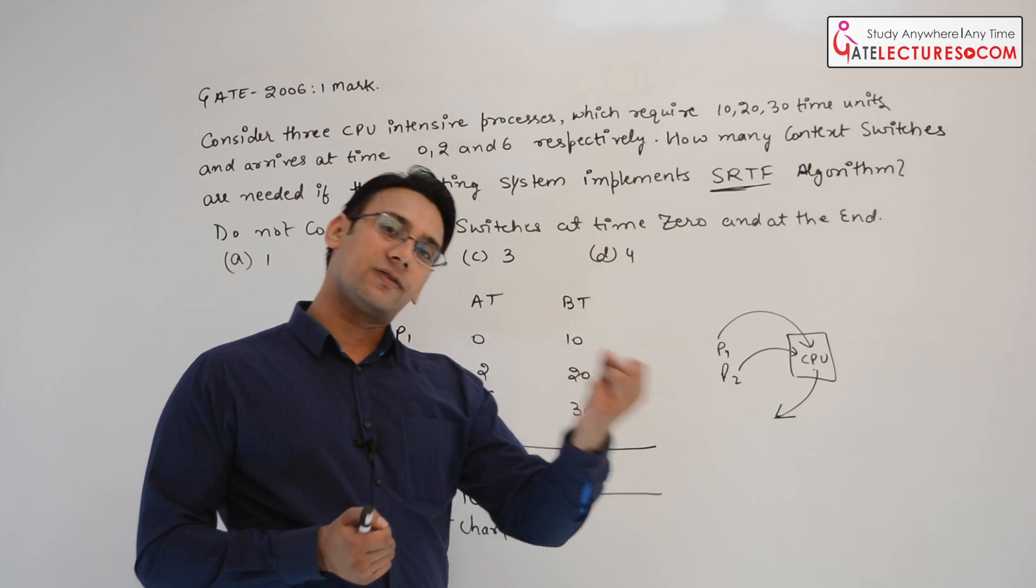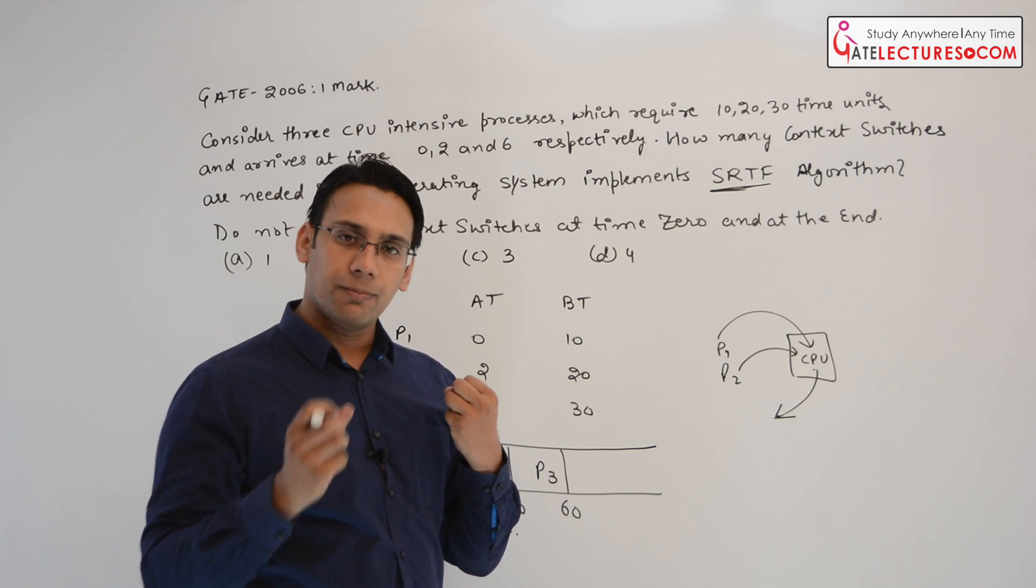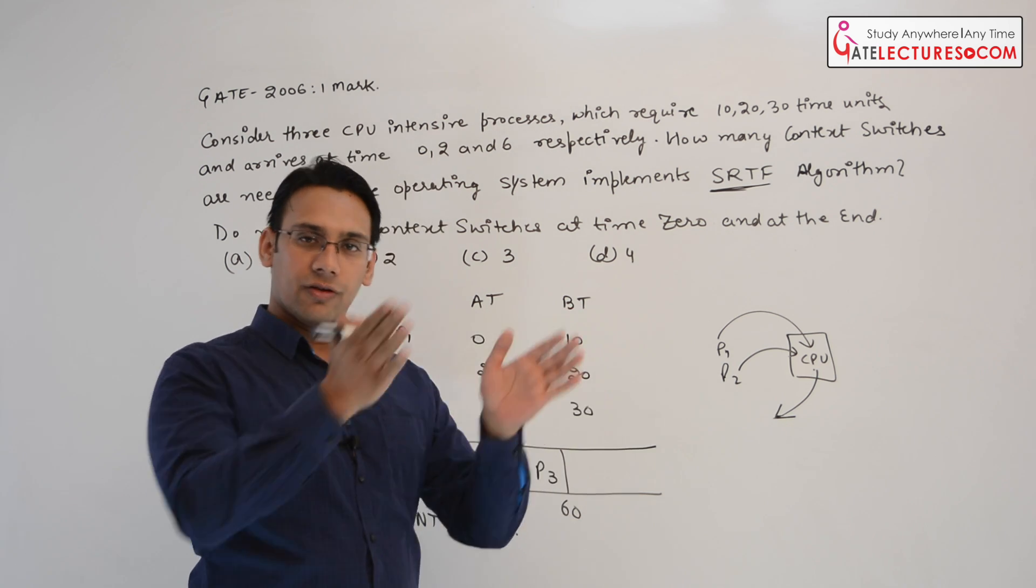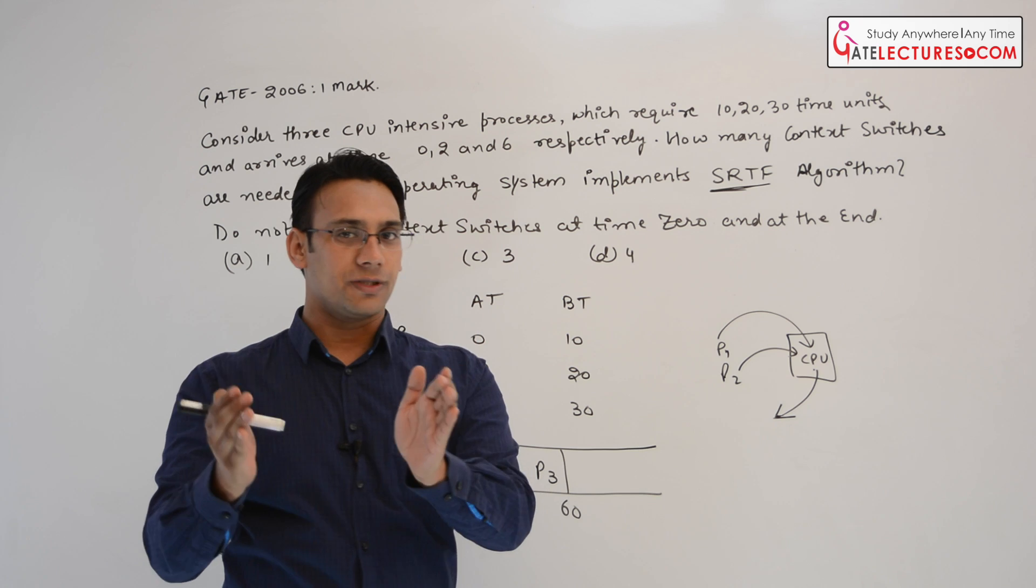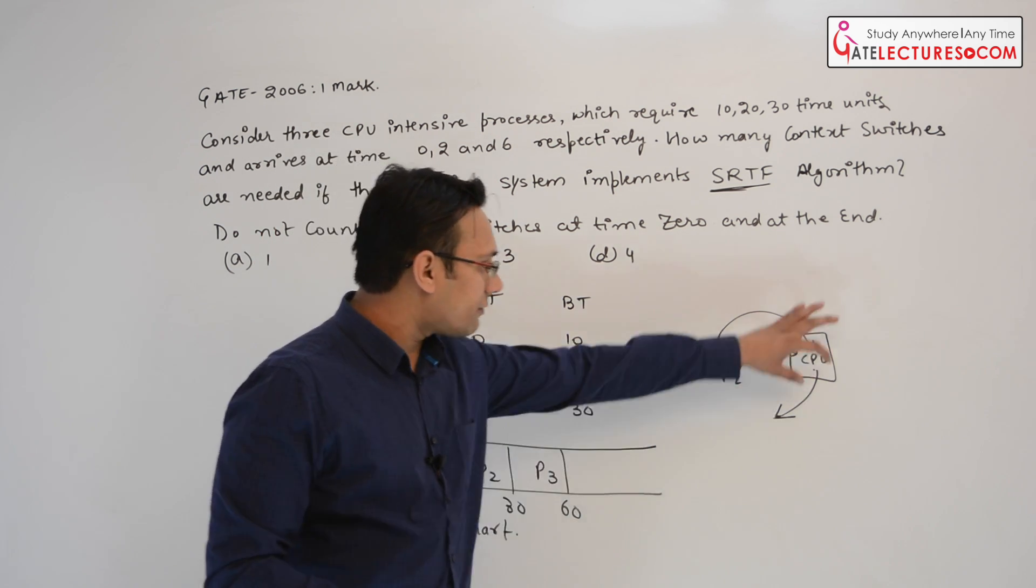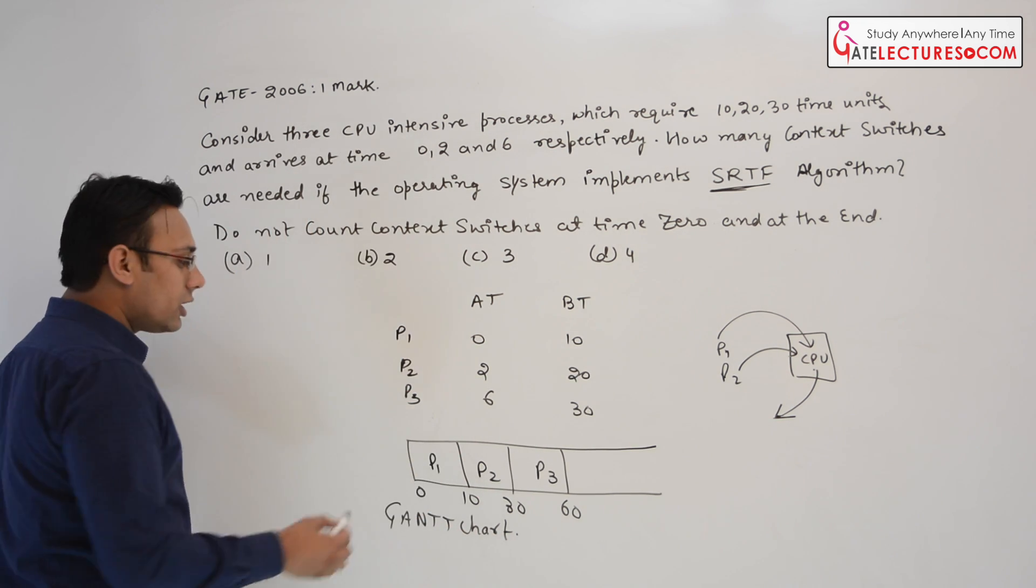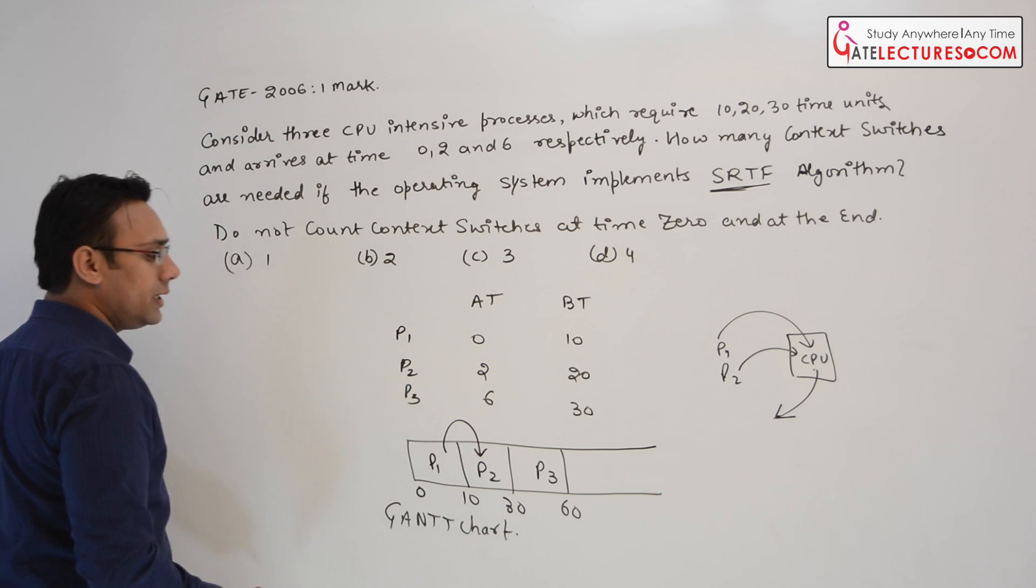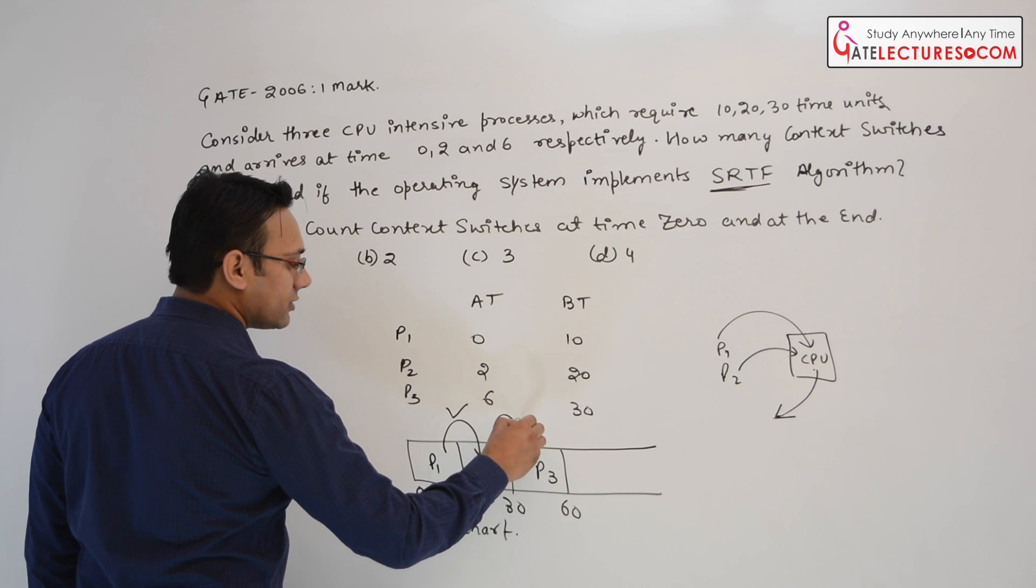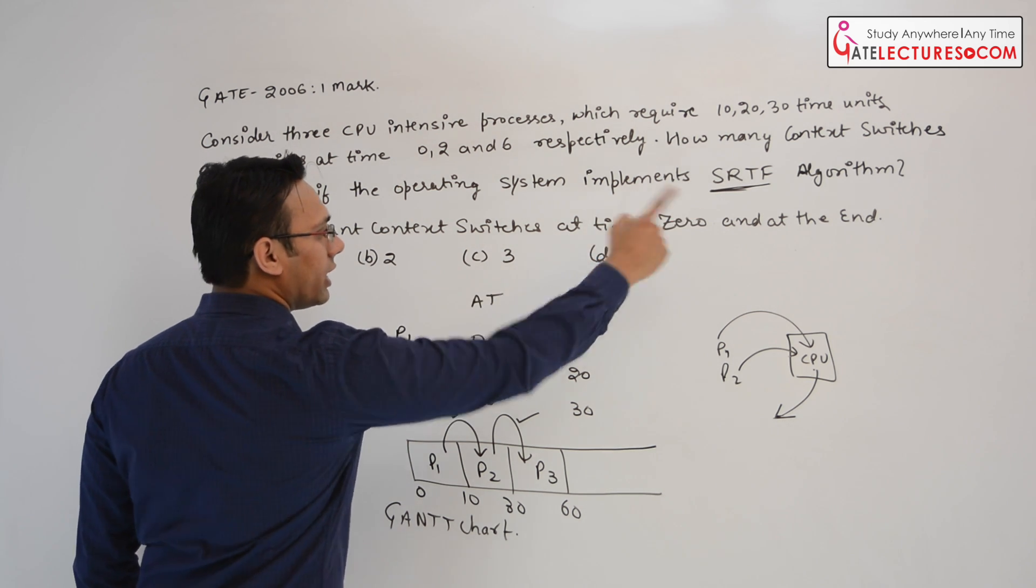Now if we take process P1 out of the CPU then we have to bring other process P2 inside the CPU. When we are basically changing the context from the previous PCB to the next PCB, we are reading the next other PCB process control block of the process P2. Therefore in this case if you see we have process P1 in the CPU. Now when we switch context from process P1 to P2 now this is a context switch.